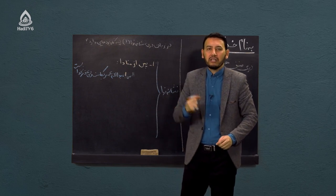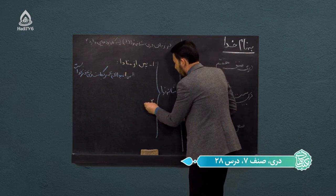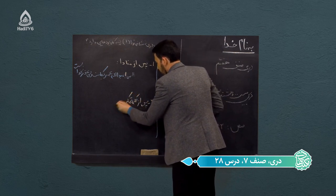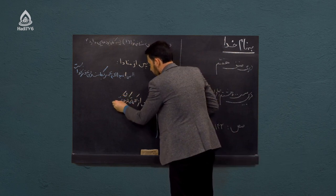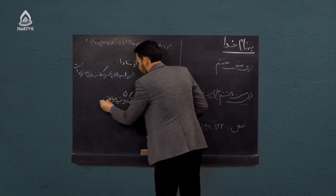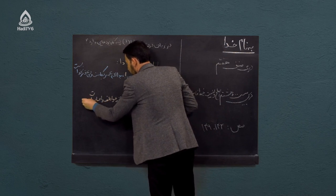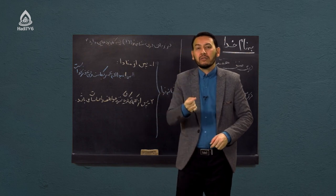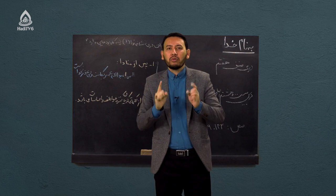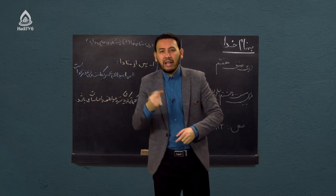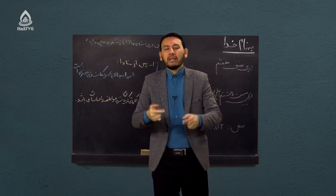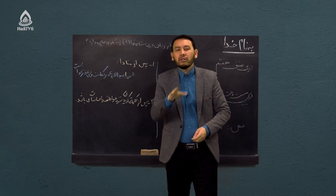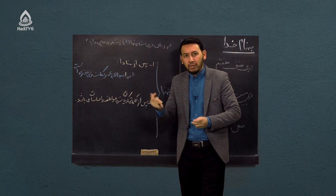مورد دوم کاربرد نشانه ندا، پس از کلماتی است که بیان‌کننده عواطف و احساسات می‌باشد. هر زمانی که در ساختار جمله کلماتی داشتیم که عواطف، احساسات و تأثرات یک شخص را بیان می‌کند، بعد از این کلمات حتماً باید علامت و نشانه ندا ذکر شود. این کلمات عبارتند از: واحسرتا، دریغا، آفرین.